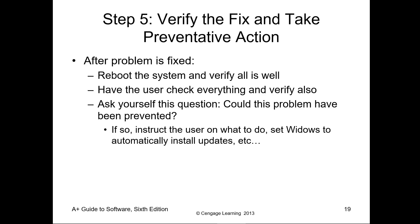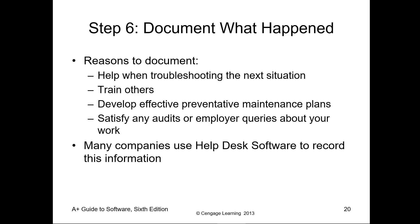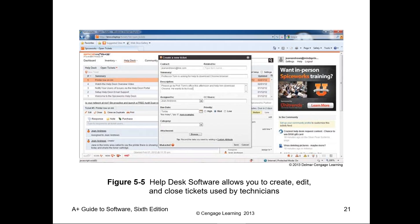Step five: after the problem is fixed, reboot, verify, double check, and have the user check. Make sure the user has verified and signed off on it. Ask yourself: could this problem have been prevented? If so, try to prevent it — that sometimes includes user training. Step six, the last step: documentation. Document what happened, things that were said, and as much as possible. Help desk software normally comes with a ticket system so you can put in a request for work to be done, it gets assigned to someone, and the work gets done. A ticket system does not have to be exclusive to help desk.